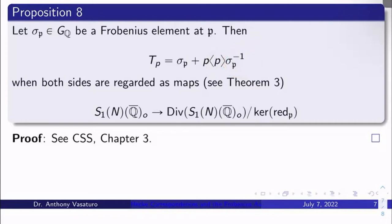And then I can put a p in front, which will give me a divisor, right? So this is a formal sum, and this is a divisor coefficient here. These both definitely make sense as maps on S₁(N)(Q̄)_O to its divisor group modulo kernel of reduction. But they both make perfect sense, and it turns out they're equal. So I get an explicit formula for the Hecke correspondence.